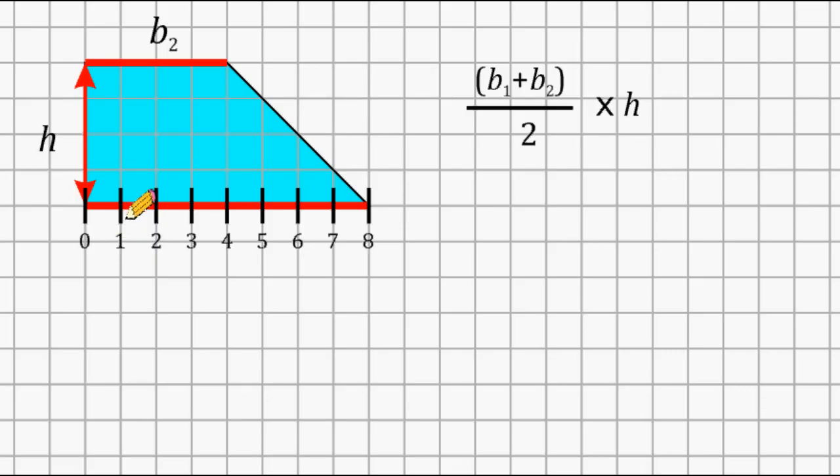So from here to here is 1, 2, 3, 4, 5, 6, 7, 8. So the length of the bottom base is a distance of 8.